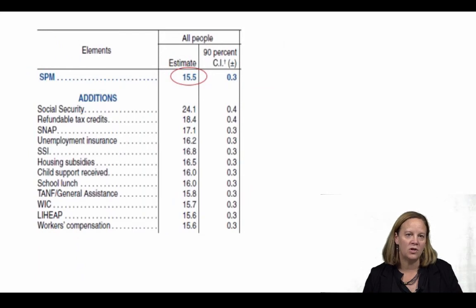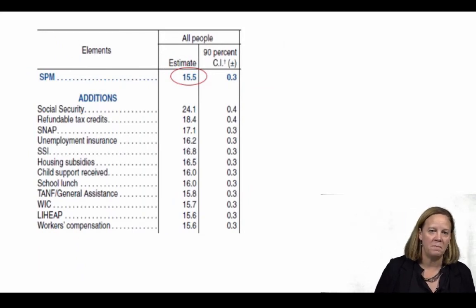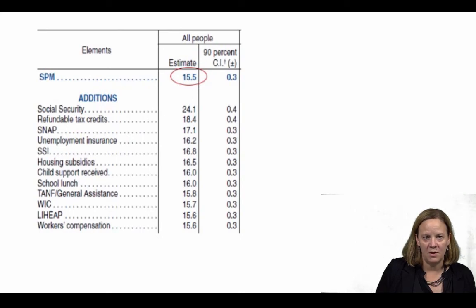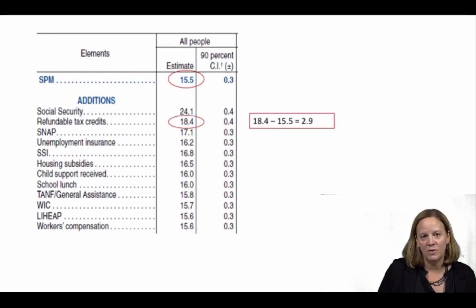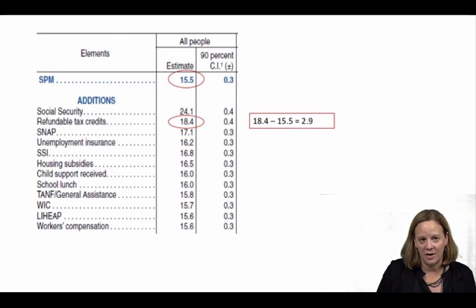For example, this chart shows the effect on poverty rates using the SPM if particular government benefits were not available. The poverty rate in the U.S. would be roughly one and a half percentage points higher without the SNAP or food stamps program, and nearly three percentage points higher without refundable tax credits like the Earned Income Tax Credit and the Child Tax Credit.